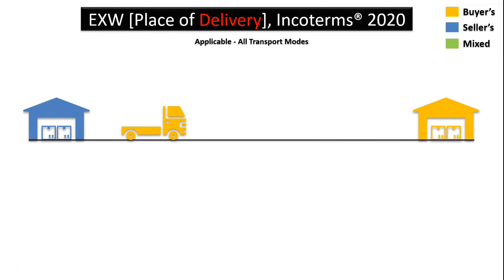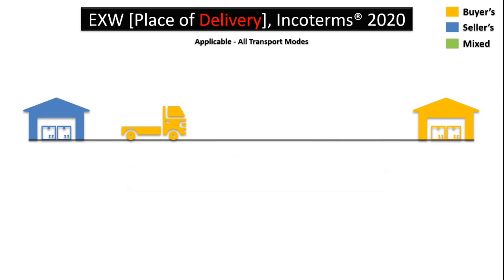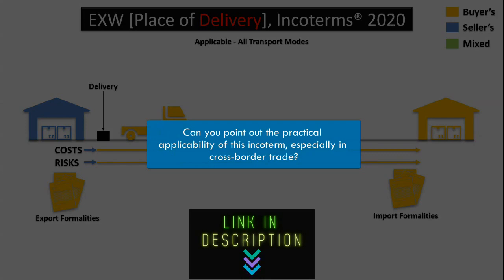The first incoterm is EXW, or Ex-Works, at a place of delivery. It describes the delivery of goods by the seller at their place of business. All the seller has to do is pack the goods and set them aside for the buyer. The seller does not need to load items onto a truck or ship — the remainder of the shipment is the buyer's responsibility. All export formalities are also the responsibility of the buyer.